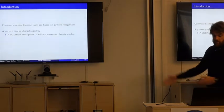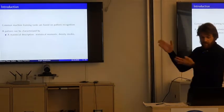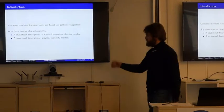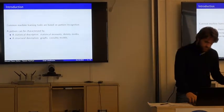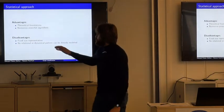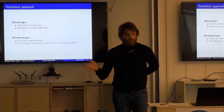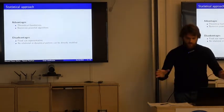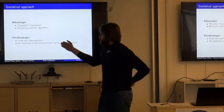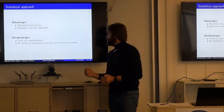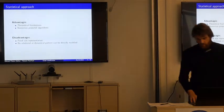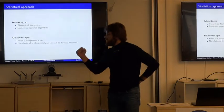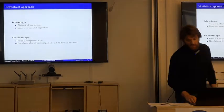First, common machine learning tasks are based on pattern recognition. Patterns can be characterized by statistical descriptions — moments, density modes, and so on — or structural descriptions like graphs, causality models, and similar things. The statistical approach has the advantage of a lot of theoretical foundations and numerous powerful algorithms implemented in many machine learning libraries. The disadvantage is a potentially less powerful representation due to the fixed size required, and you cannot directly model relational or dynamical patterns.